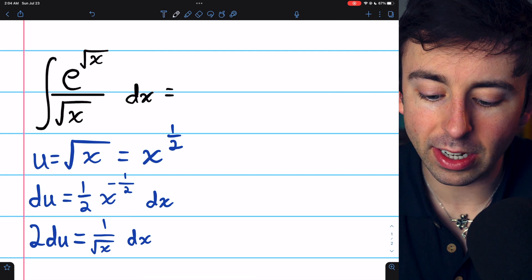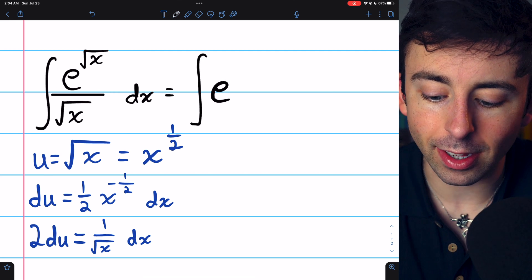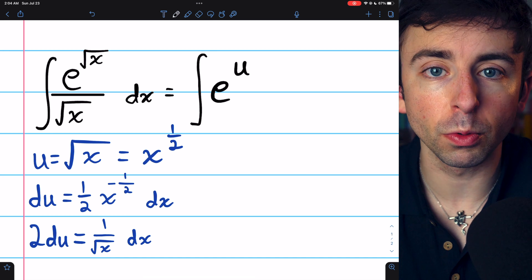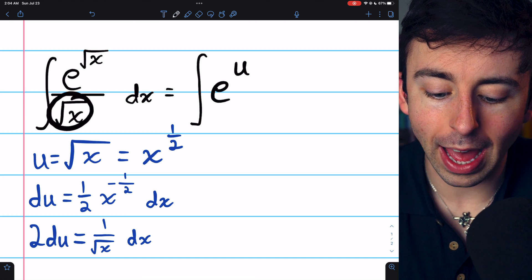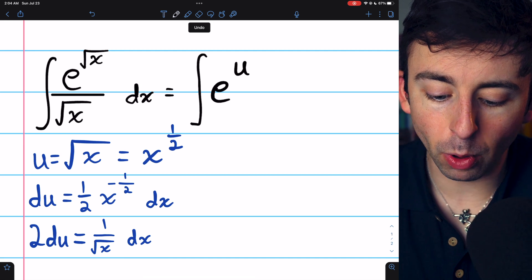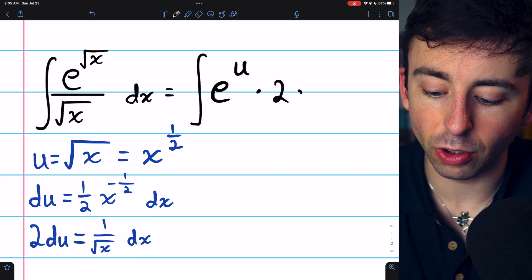So let's rewrite it now in terms of u. e to the root x is now e to the u, because u equals root x. What was left in the integrand was one over root x dx. But one over root x dx, we know is the same as two du.